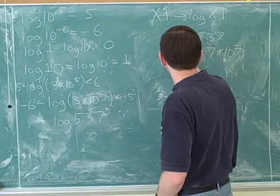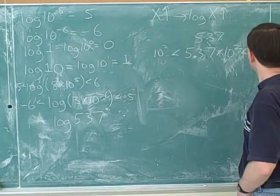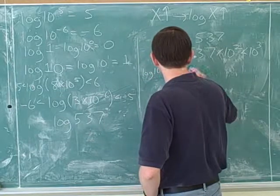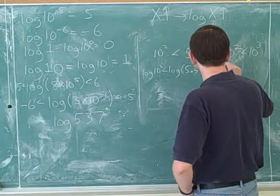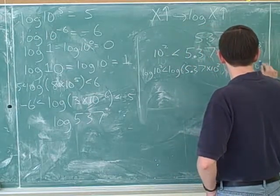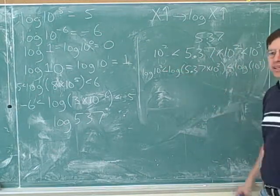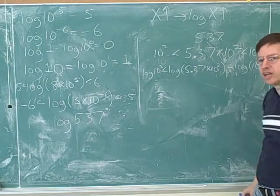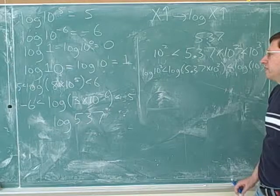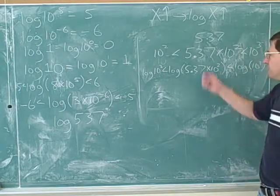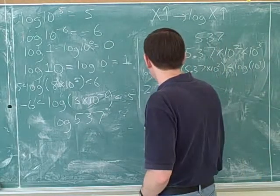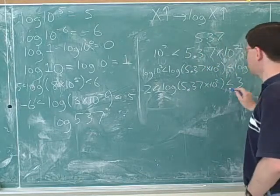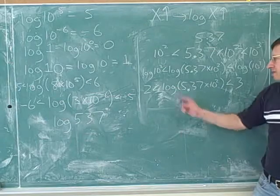Now we can compare this. We know this is bigger than 10 squared and less than 10 cubed. And now we can take the log of everything. Since we're taking the log, the inequalities don't flip. The step you kind of skipped again — it's a good habit to first write down the numbers without the logs and only then take the logs. The log of 10 squared is 2, and the log of 10 to the third is 3. So the exact right answer is that this logarithm is between 2 and 3.